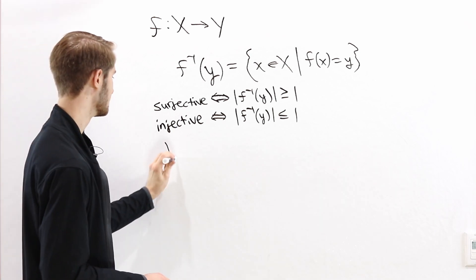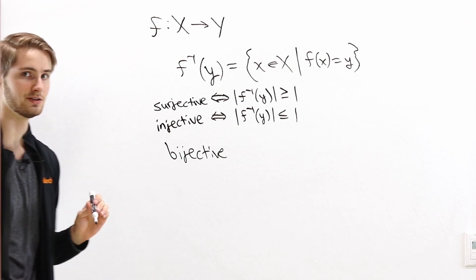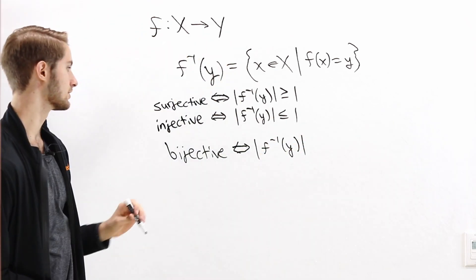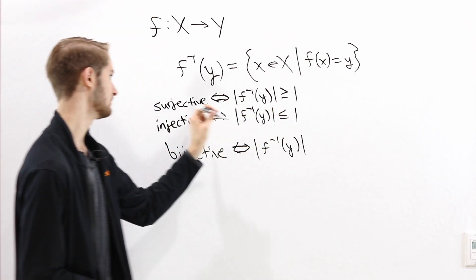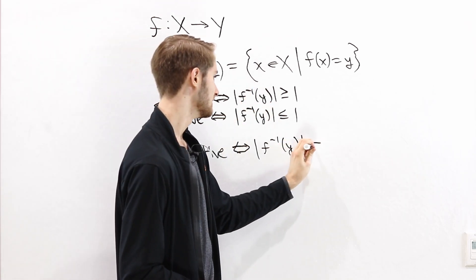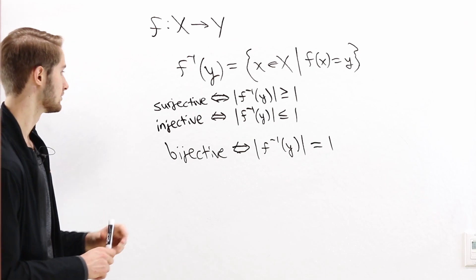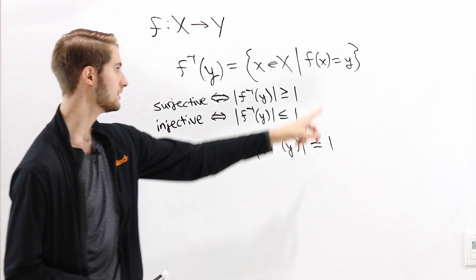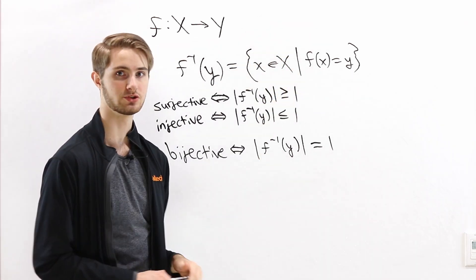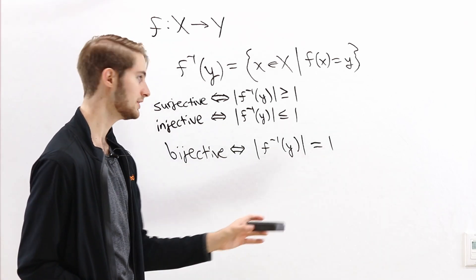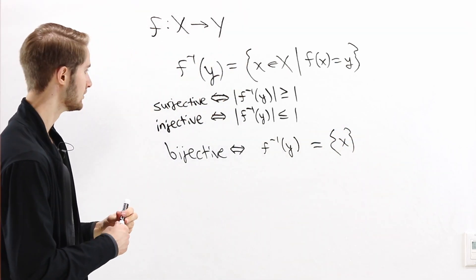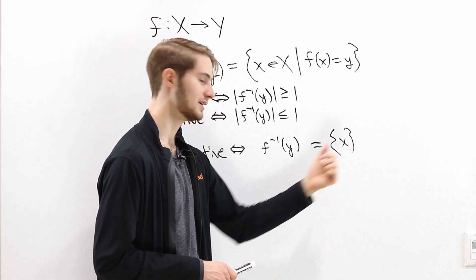So now, what happens if we look at a function that's bijective? By definition, a function is bijective if it's injective and surjective. This means that for each element of the codomain, the preimage f inverse of y is greater than or equal to 1 (surjective) and also less than or equal to 1 (injective). So the only possibility is that the size of the preimage equals exactly 1. There is exactly one input that maps to each output. Since this preimage is a set with exactly one element — a singleton — for each output in the codomain we can write the preimage as the set containing one input x.